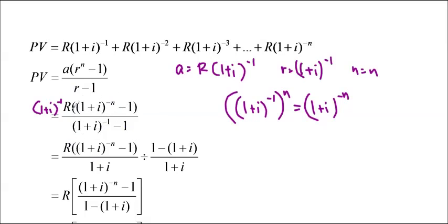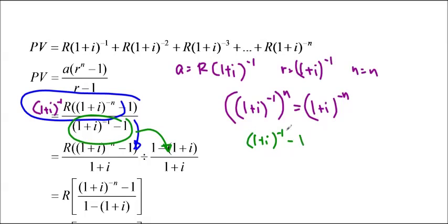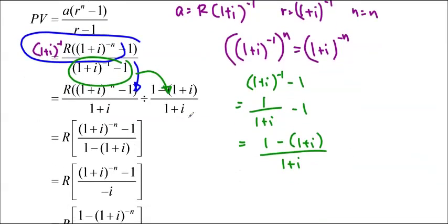This top part is divided by 1 plus i because it's 1 plus i to the negative 1. So I just moved it to the bottom. This is the numerator here. Let me just show it. This numerator is right here and the denominator I put over 1 plus i. The reason is because 1 plus i to the negative 1 minus 1 is equal to 1 over 1 plus i to the negative 1. So this is 1 minus 1 plus i over 1 plus i.